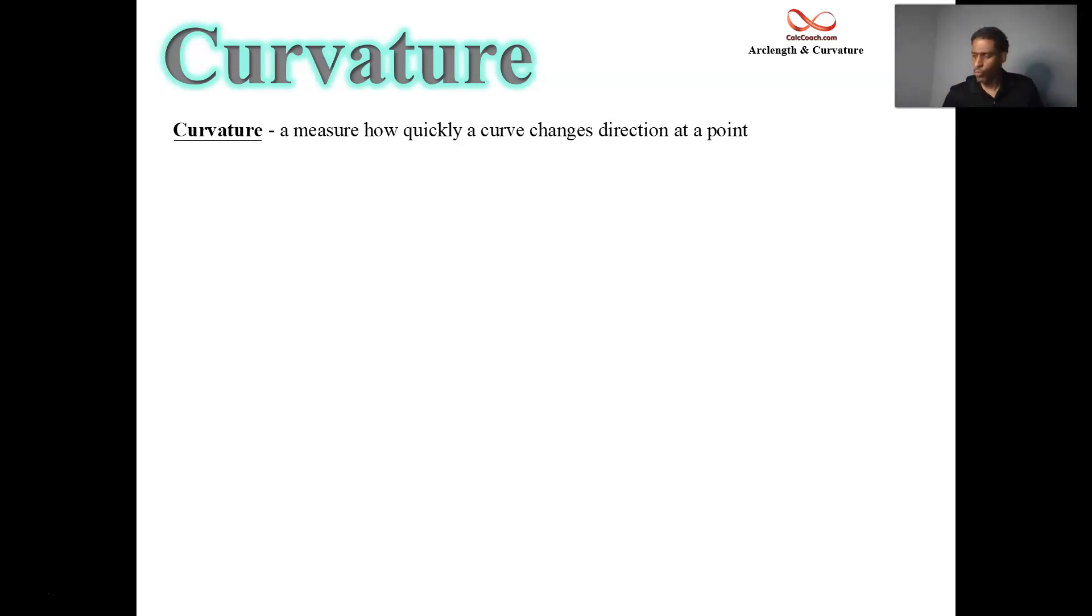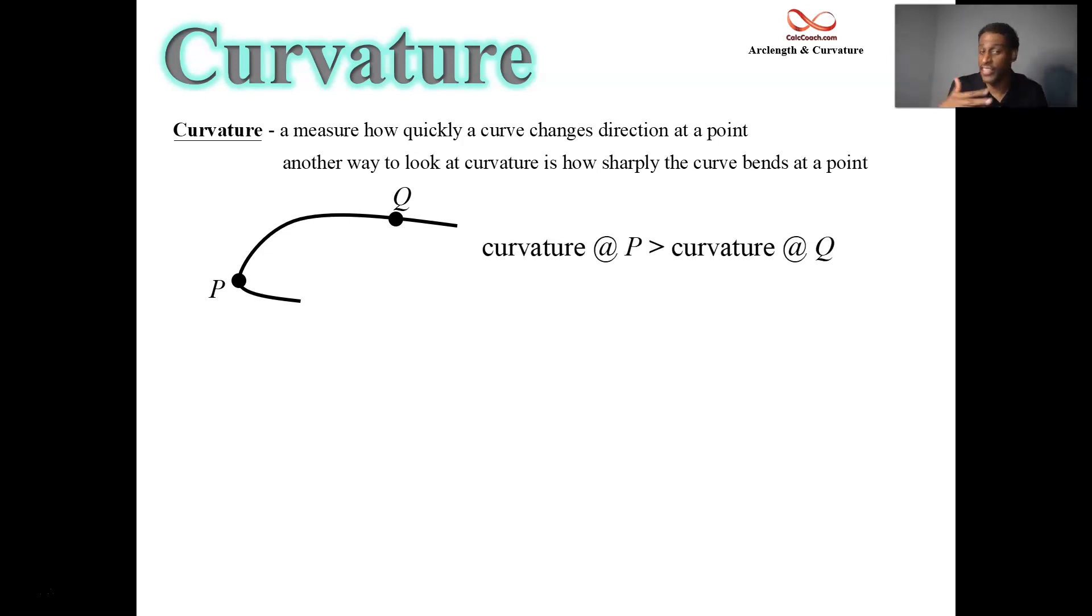In curvature, we're not measuring how long we traveled along the curve. Like arc length, we are measuring the degree of bend, how quickly the curve changes direction at a particular point. It's the bendiness, how sharp the bend is, a measurement of how sharp the bend is. Curvature is the name of it. I have this curve here and I have two points labeled P and Q. One point has a much sharper bend than the other point. The curvature at P is much much more than the curvature at Q. If the curve is flat, there's not much curvature there. There's not much bend. But if the curve has this turn to it, the bendiness, the curvature, is a larger value.